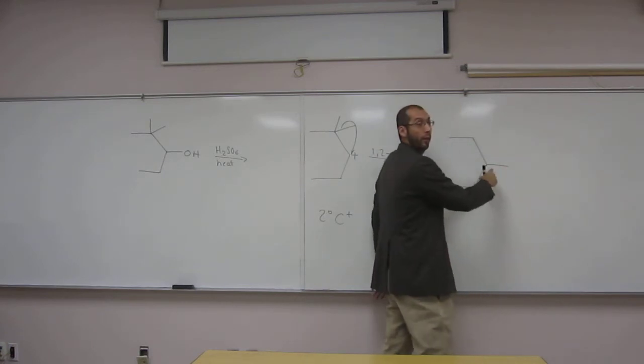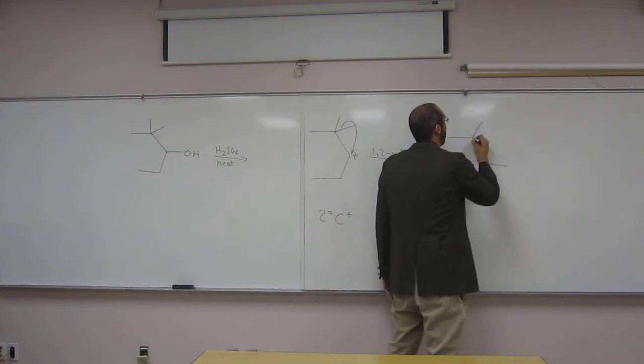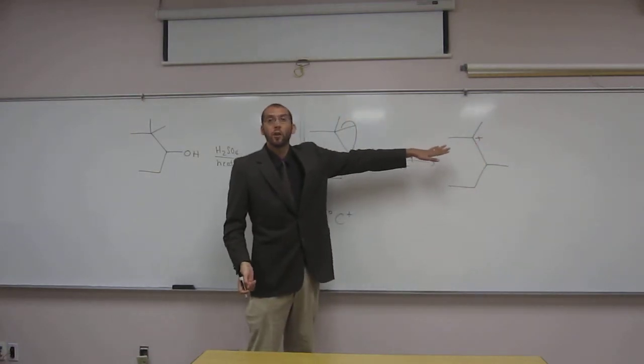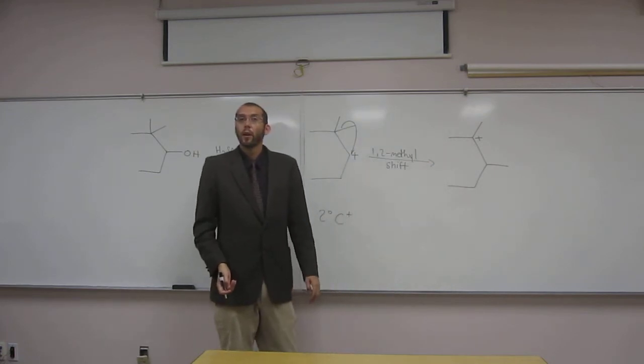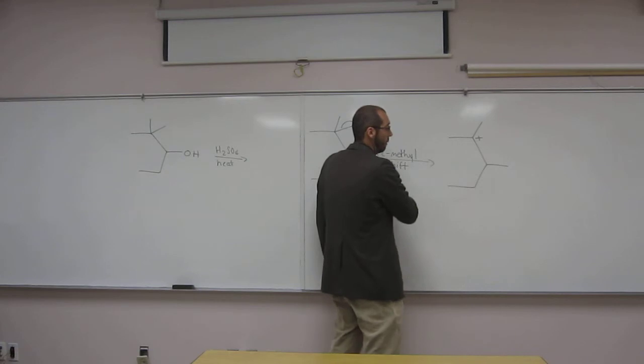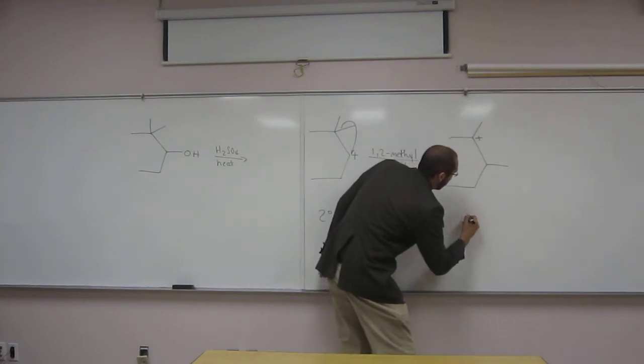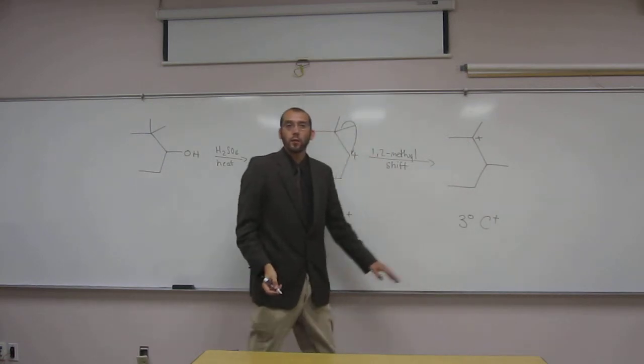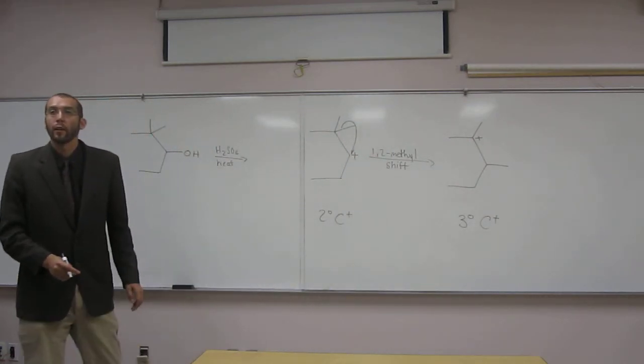So now we've got that methyl group there doing that 1,2 shift and our other methyl group stays put. Our positive charge moves to that carbon there, the carbon alpha to the initial positive charge. And we now have a tertiary carbocation, which is more stable than the secondary carbocation.